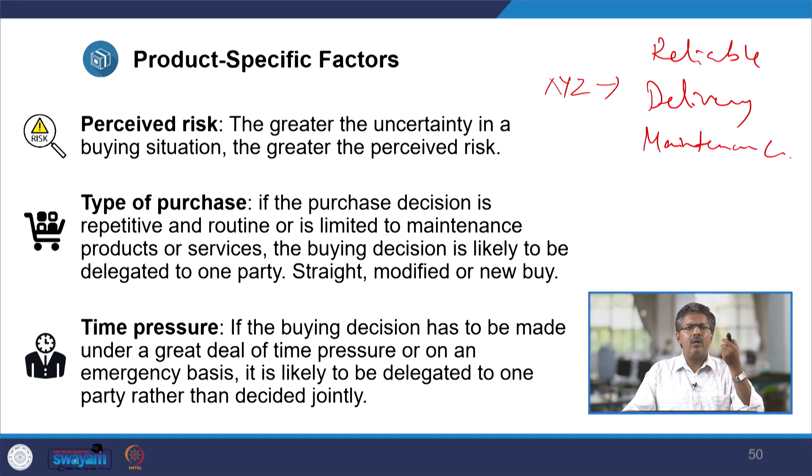The third product-specific factor is time pressure. If the buying decision has to be made under a great deal of time pressure or on an urgent emergency basis, it is likely to be delegated to one party rather than decided jointly, because you cannot wait for the file to pass through a bureaucratic process. In such situations you will automatically look for an autonomous decision. But if it is a well-planned strategy with enough time and it is a new purchase, companies would go for a joint decision making process because they can surely make some savings.